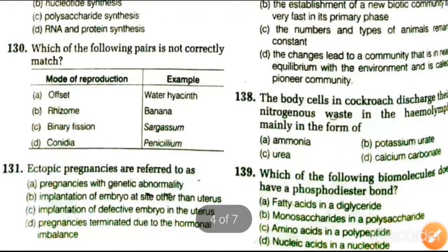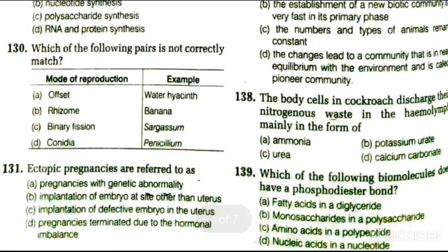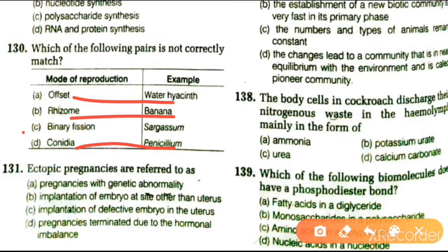Next question: which of the following pairs is not correctly matched? Offset to water hyacinth is right, ribosome is also right, but binary fission to Sargassum is wrong because binary fission does not occur in Sargassum. It reproduces by fragmentation. In Spirogyra it occurs by fragmentation. The correct option is C.